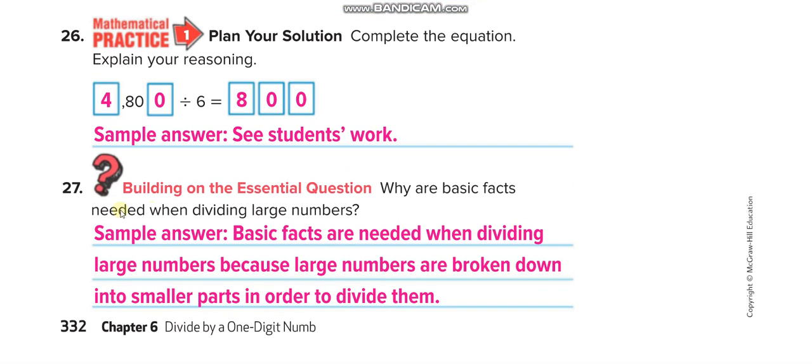Why are basic facts needed when dividing large numbers? Basic facts are needed when dividing large numbers. Basic facts means, guys, the numbers without the zeros. When dividing large numbers, because large numbers are broken down into smaller parts in order to divide them easily and quickly.